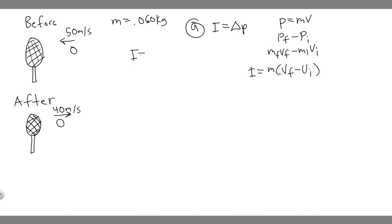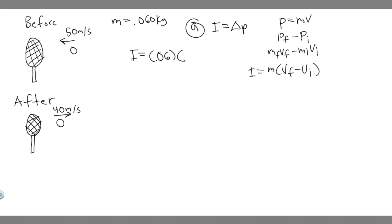We can go ahead and plug in. The mass is 0.06 kilograms, and we need v_final minus v_initial. We need to make sure the units and signs align. I'm going to denote the initial direction of travel as positive, so the initial velocity is positive 50 m/s. The return direction is opposite, so the final velocity is negative 40 m/s.